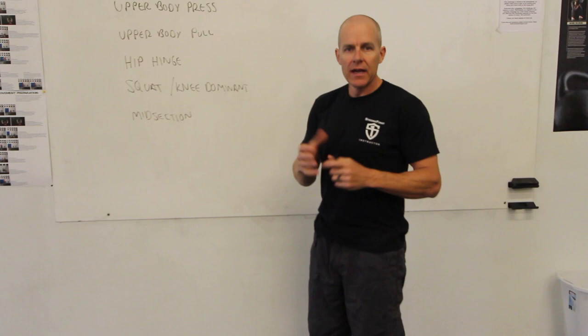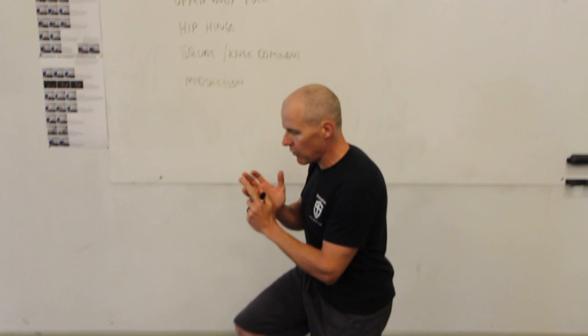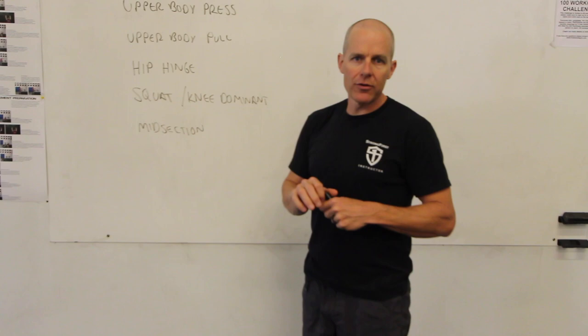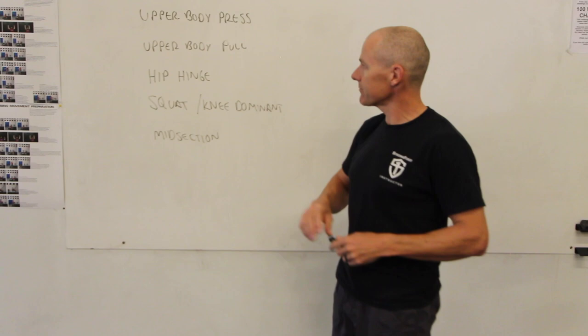Squat or knee dominant movement pattern will be everything from regular squatting movements to our single leg variations like split squats to a pistol squat, even the step ups—basically everything you do when you're straightening the knee. And then midsection training. This is high load core training where we're trying to improve your ability to maintain stiffness in the midsection.